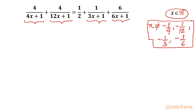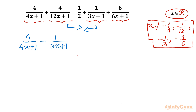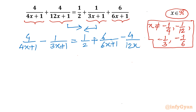Now I will consider simplification. I will take the term 4 over (12x+1) to the right and the term 1 over (3x+1) to the left. So the equation will look like: 4 over (4x+1) minus 1 over (3x+1) on the left, equals 1/2 plus 6 over (6x+1) minus 4 over (12x+1) on the right.